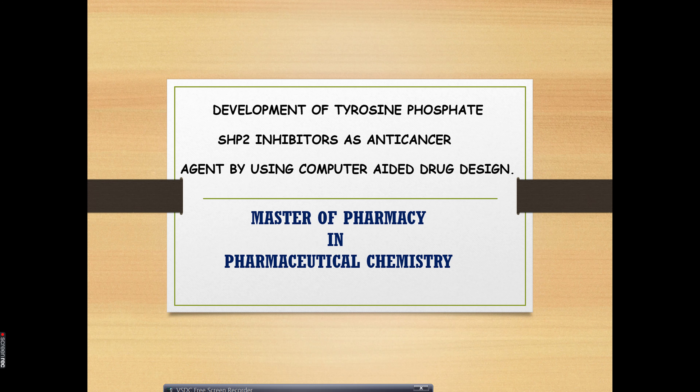Let me tell you some basic points of making any synopsis of research work or thesis writing. My topic is development of Tyrosine Phosphatase SHP2 inhibitor as an anti-cancer agent using computer-aided drug design. I take it as a receptor and use drug design software with molecular docking, in silico simulation, or MD simulation studies to basically extract 10 to 15 compounds for a master's in pharmaceutical sciences and chemistry.